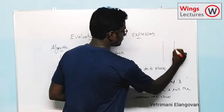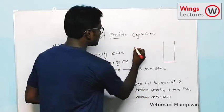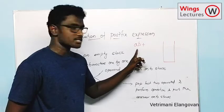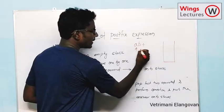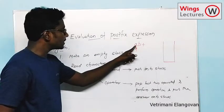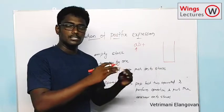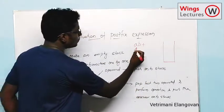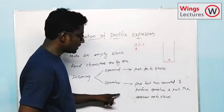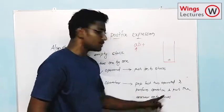First we have to make an empty stack. Then read the character one by one. If the incoming character is an operand, push it onto the stack. This is completely contrast to infix to postfix conversion. So if it is an operand, we have to place it into the stack. And if it is an operator, pop the last two operands, perform the operation, and push the answer into the stack.